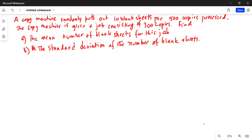A copy machine randomly puts out 10 blank sheets per 500 copies processed. The copy machine is given a job consisting of 300 copies. Find: a) the mean number of blank sheets for this job and b) the standard deviation of the number of blank sheets. So this is a problem on Poisson distribution.